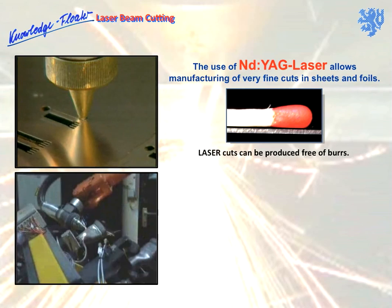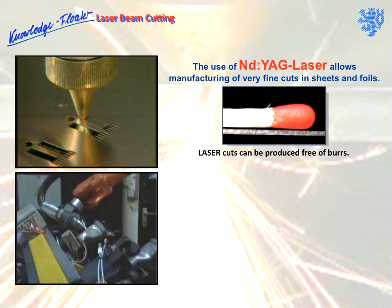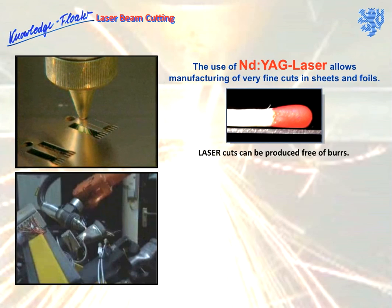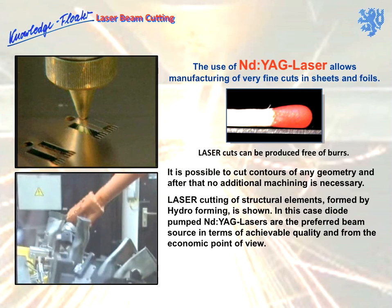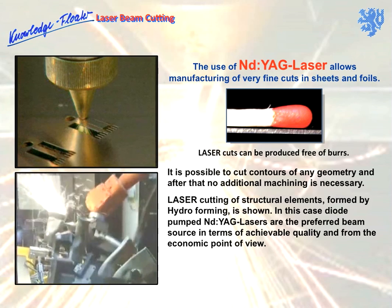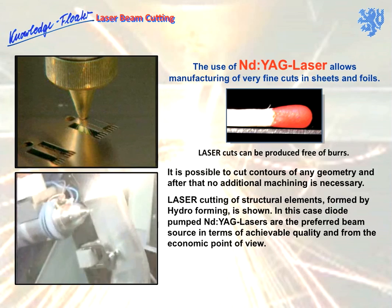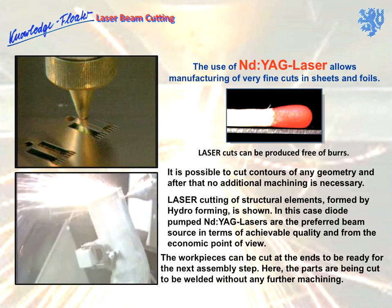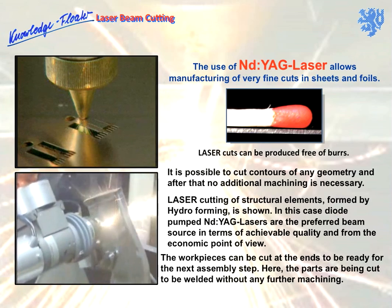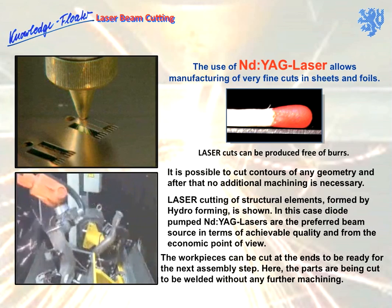The neodymium YAG laser, however, is able to produce very fine cuts in thin metal sheets and foils. These laser cuts can be produced free of burns, and no additional machining is necessary afterward. The video shows laser cutting of structural hydroforming elements. Diode-pumped YAG lasers are the preferred beam source in terms of quality and from an economic point of view. These workpieces are cut at the ends to be prepared for the next step — the parts are cut and then welded without any further necessary machining.